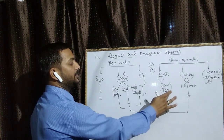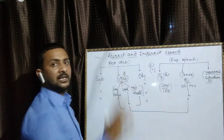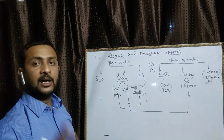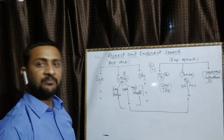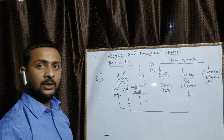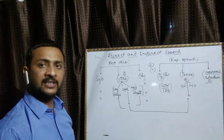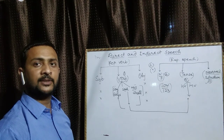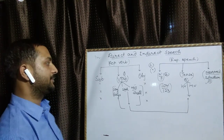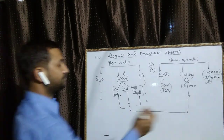First person: I और We। Second person: You। और जो भी बाकी के subjects होते हैं वो third person की तरफ जाते हैं। Second person change होता है according to object।